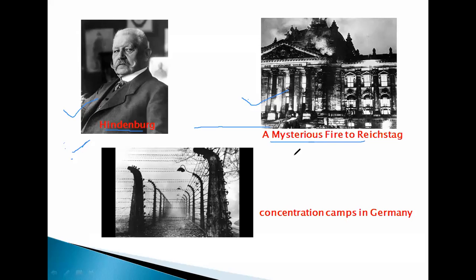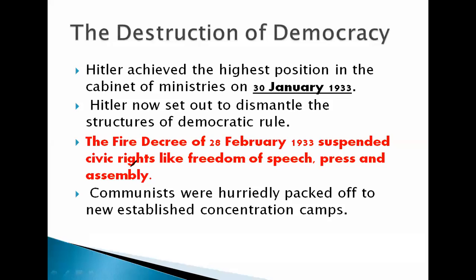The fire benefited Hitler and helped him move to the next stage. What do you think — who had set this fire? There was no clear answer given to the people of Germany. The Fire Decree of 28 February 1933 indefinitely suspended civic rights.